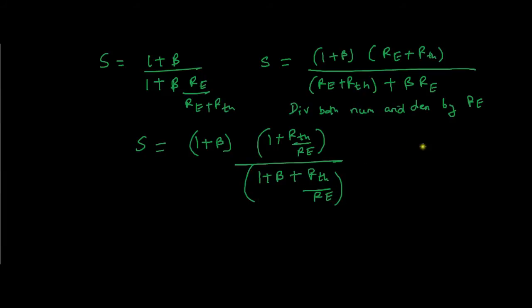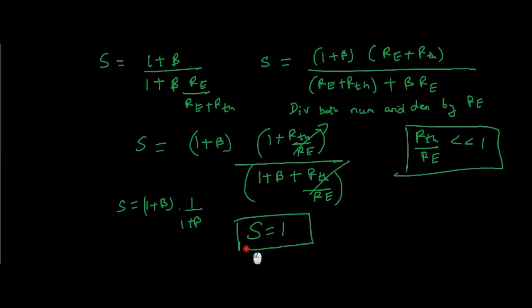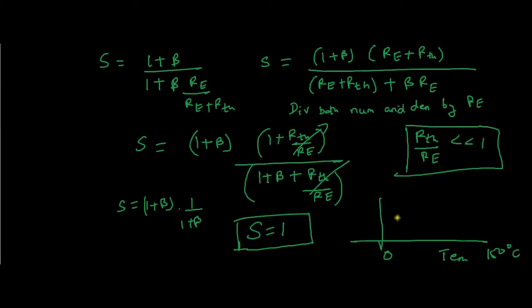Now imagine if the ratio RTH/RE is much much less than 1. If it is much less than 1, we can ignore it — (1 + much less than 1) is approximately equal to 1. We can ignore those terms. Then our stability factor becomes (1 + β)·1 / (1 + β) = 1. So the stability factor equals 1, meaning in a temperature range of 0 to 150°C your stability factor is constant.